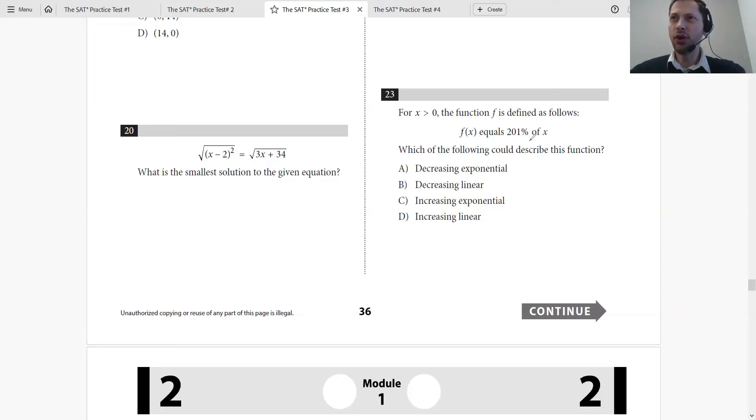What does that mean? 201% - we know 200% is going to be 3, so it would be 3.01. So f of x equals 3.01 times x. How would you describe this function? It's literally a linear function because it's 3.01x, just like y equals mx plus b.